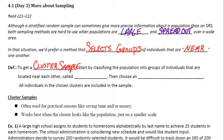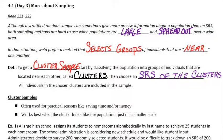To get a cluster sample, start by classifying the population into groups of individuals that are located near each other, called clusters. Then choose an SRS of the clusters — randomly choose those different groups of people that are near each other. All individuals in the chosen clusters are included in the sample.